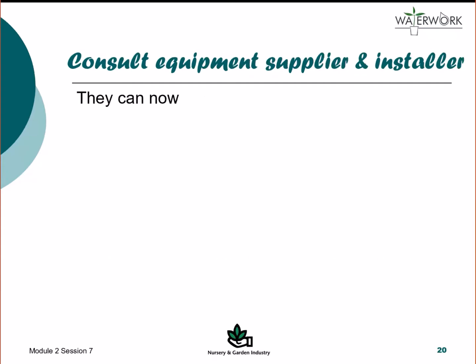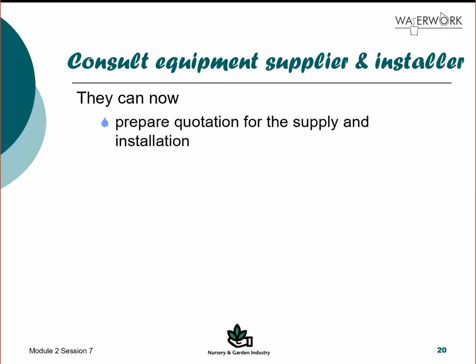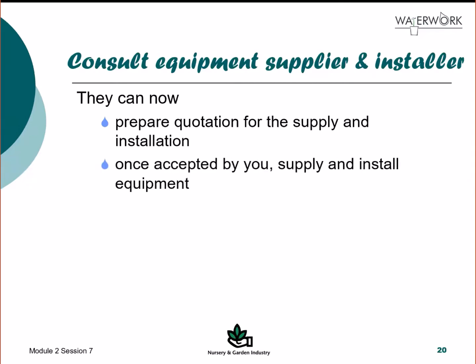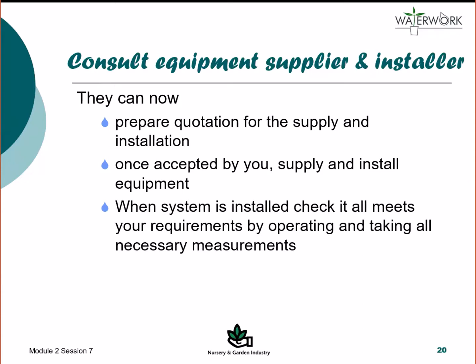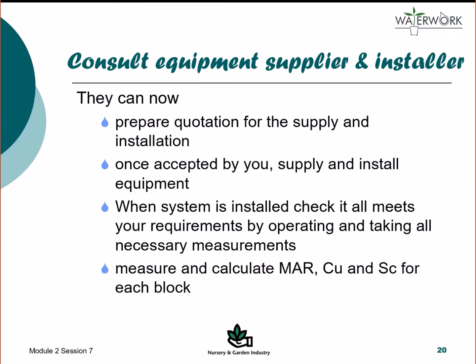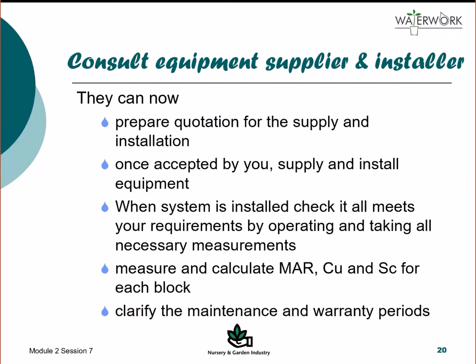Following the completion of the design, the equipment supplier and installer can prepare a quotation for the supply and installation of equipment. Once approved, supply and install the equipment. After installation, check that the system meets the requirements of the design by operating and performing all necessary checks and comparing results with those specified by the designer. Measure and calculate mean application rate, coefficient of uniformity and scheduling coefficient for each block, and advise the nursery owner of the maintenance and warranty periods prior to acceptance. The nursery operator should always discuss any suggested changes, additions or modifications with the designer prior to acceptance and installation.